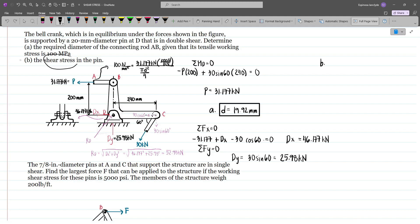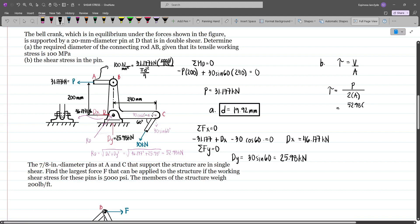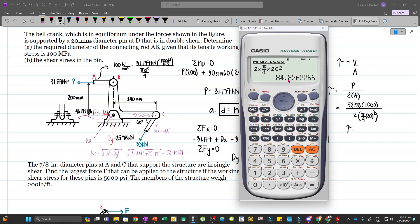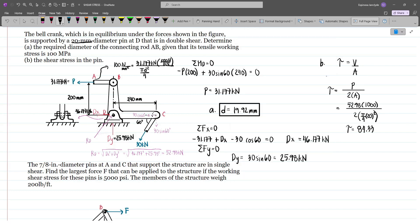For letter B, we compute the shear stress in the pin where τ equals force over area. However, since our section is in double shear due to this configuration, τ becomes force divided by 2 times the area. That will be 52.98 times 1000 divided by 2 times π/4 times d². Our diameter here is 20mm because this is for the pin at D, so this will be 20². Our shear stress will be 84.33 MPa.